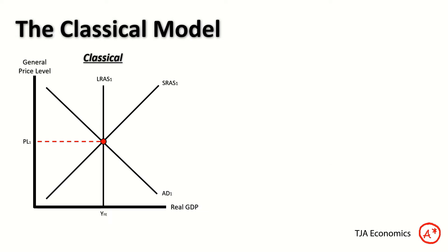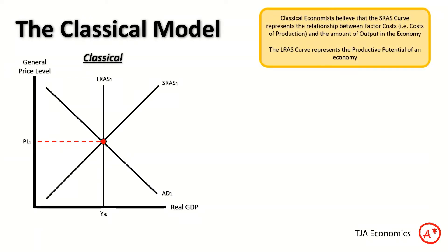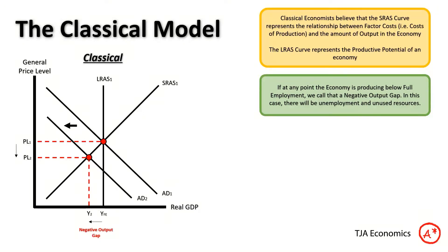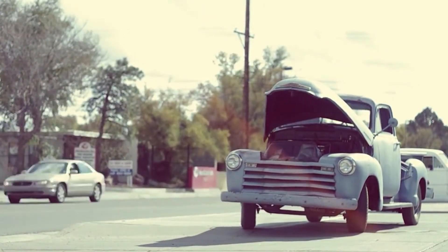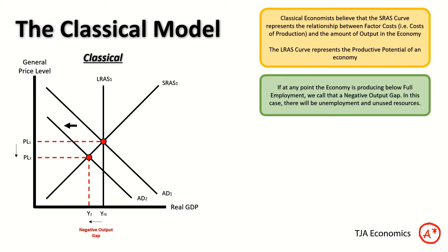The big difference is how each model deals with changes in the economy and the assumptions they make. In the classical economist's view, the SRAS curve represents the relationship between factor costs (input costs) and output. The LRAS represents productive potential. If the AD curve shifts inwards and we produce below full employment, we call that a negative output gap — because there are unemployed workers, unused buildings, factories, machinery, tractors, and vehicles.